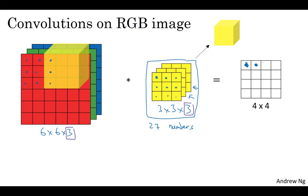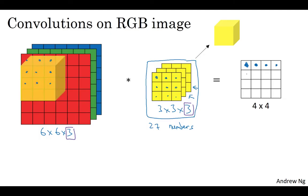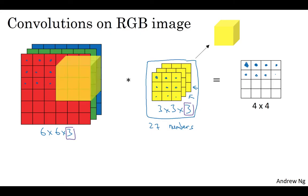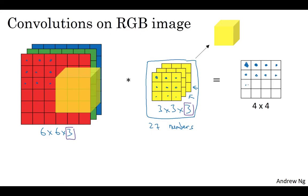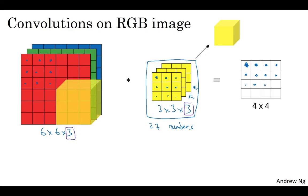You continue for each position: the third output, the fourth, then one row down, and so on, until at the very end you get the final output.